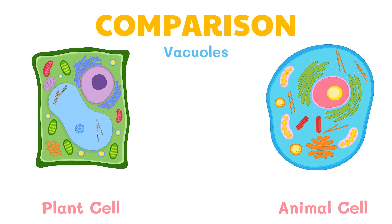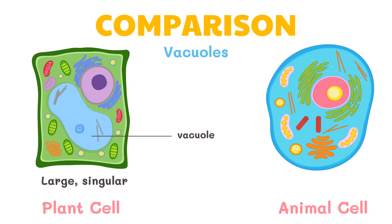Both plant and animal cells have vacuoles. A plant cell contains a large singular vacuole used for storage and maintaining the shape of the cell. In contrast, animal cells have many smaller vacuoles, which are not seen in this illustration.